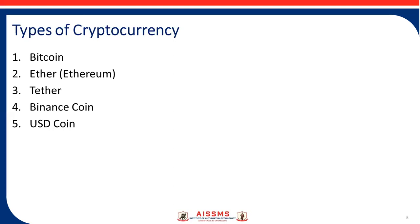Bitcoin is regarded as the first decentralized cryptocurrency, using blockchain technology to facilitate payments and digital transactions. Instead of using a central bank to control the money supply — like the Federal Reserve in tandem with the US Department of the Treasury — or third parties to verify transactions, Bitcoin's blockchain acts as a public ledger of all transactions in the history of Bitcoin, helping prevent fraud and unauthorized tampering with the currency.